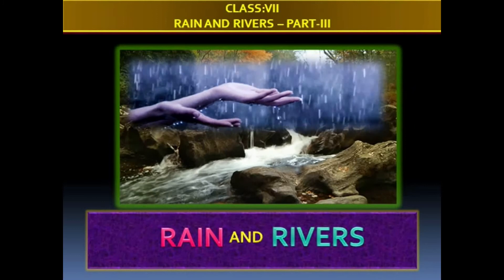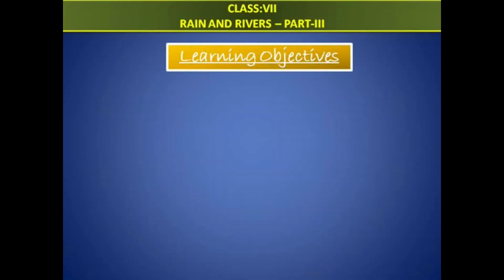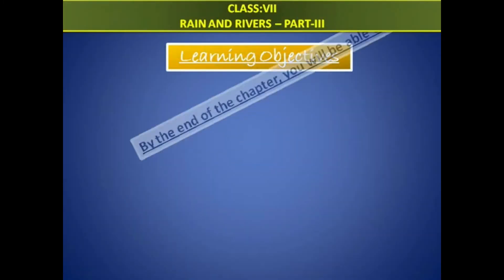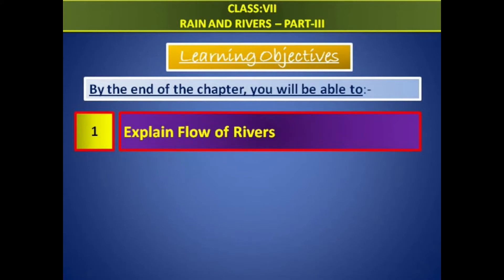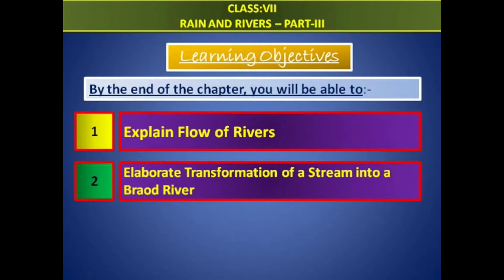Third part of rain and rivers — learning objectives. By the end of the chapter, you will be able to explain the flow of rivers and elaborate the transformation of a stream into a broad river.